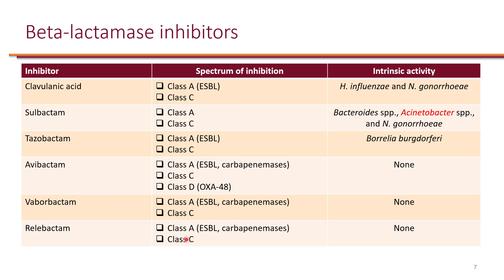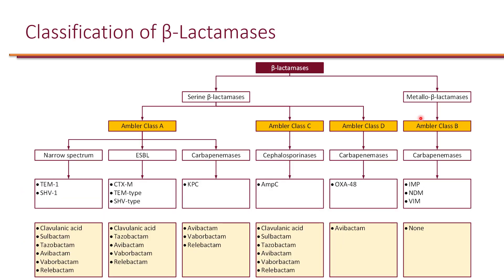In addition to inhibiting beta-lactamases, some of these agents also have direct activity against certain organisms. Clinically important is that sulbactam itself is active against Acinetobacter. In the United States, sulbactam is bundled with ampicillin as ampicillin-sulbactam. The sulbactam component — not the ampicillin — has direct activity against Acinetobacter and is sometimes used clinically for this purpose.